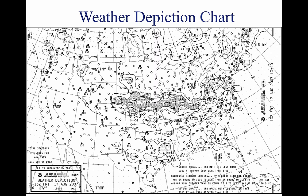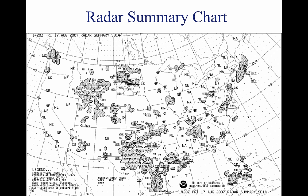A radar summary chart is a graphically depicted collection of radar weather reports (SDs). The chart is published hourly at 35 minutes past the hour. It displays areas of precipitation as well as information regarding the characteristics of the precipitation. The radar summary chart is a valuable tool for preflight planning; however, it contains several limitations. This chart depicts only areas of precipitation. It will not show areas of clouds and fog with no appreciable precipitation, or the height of the tops and bases of the clouds. Radar summary charts should be used in conjunction with the current METAR and weather forecasts.